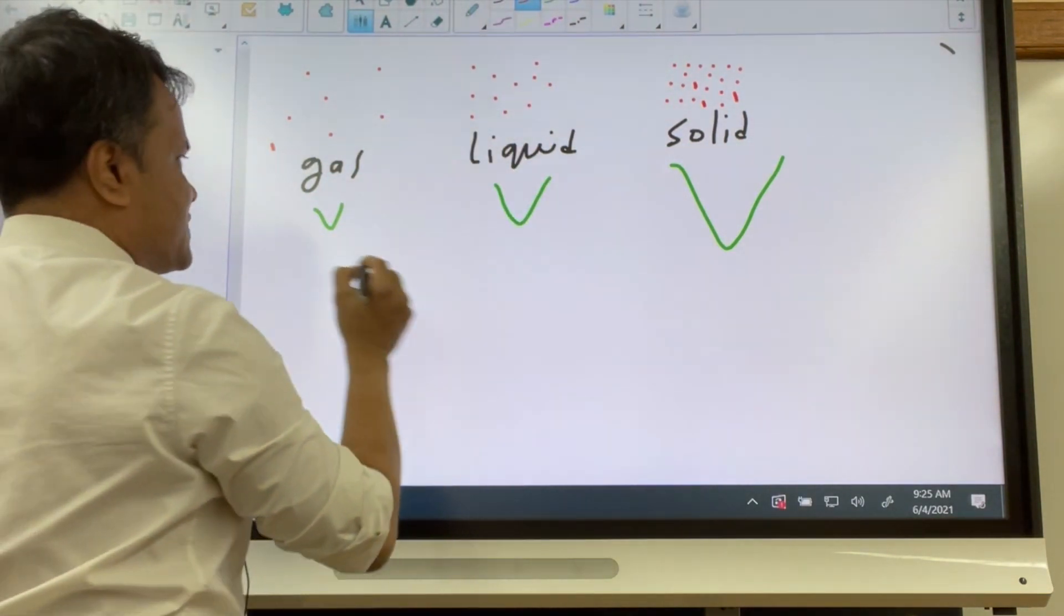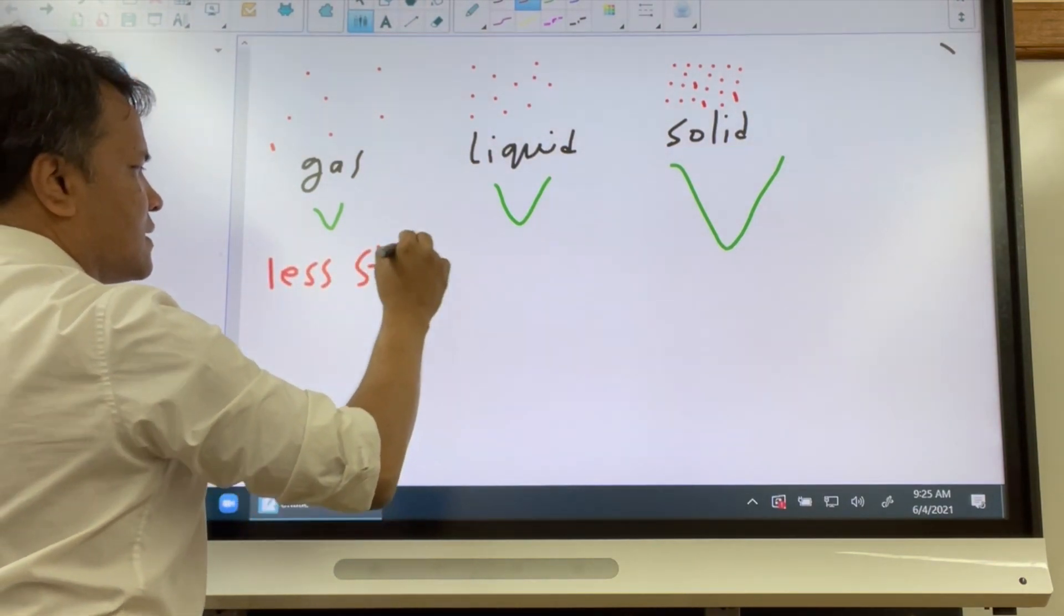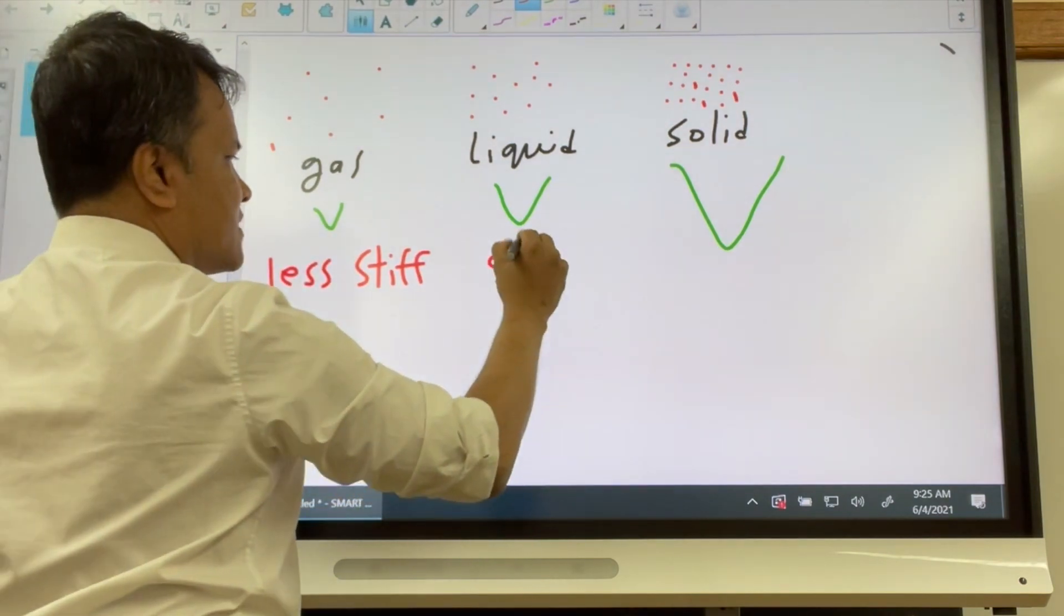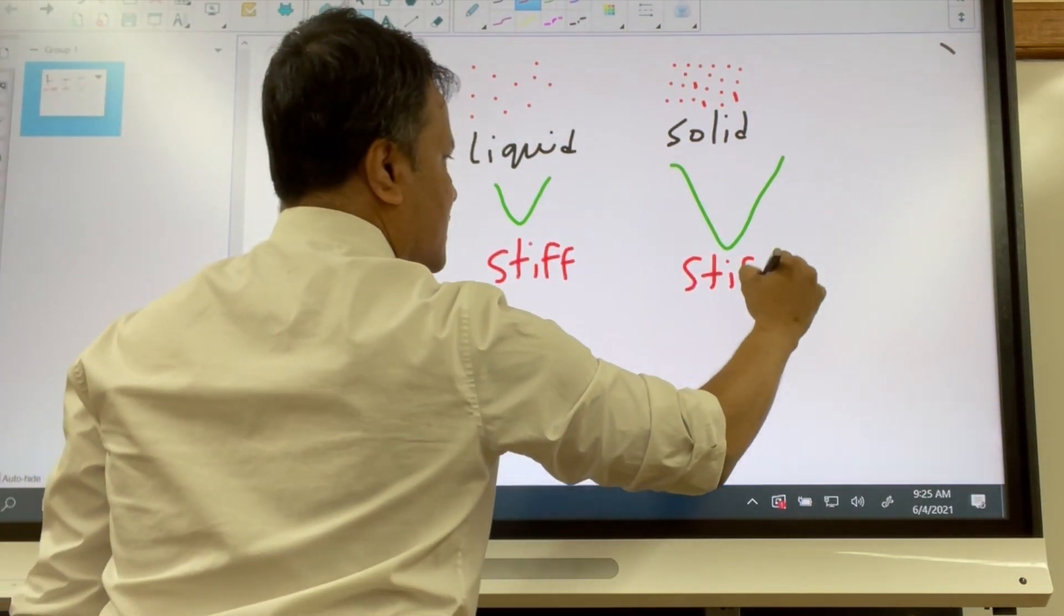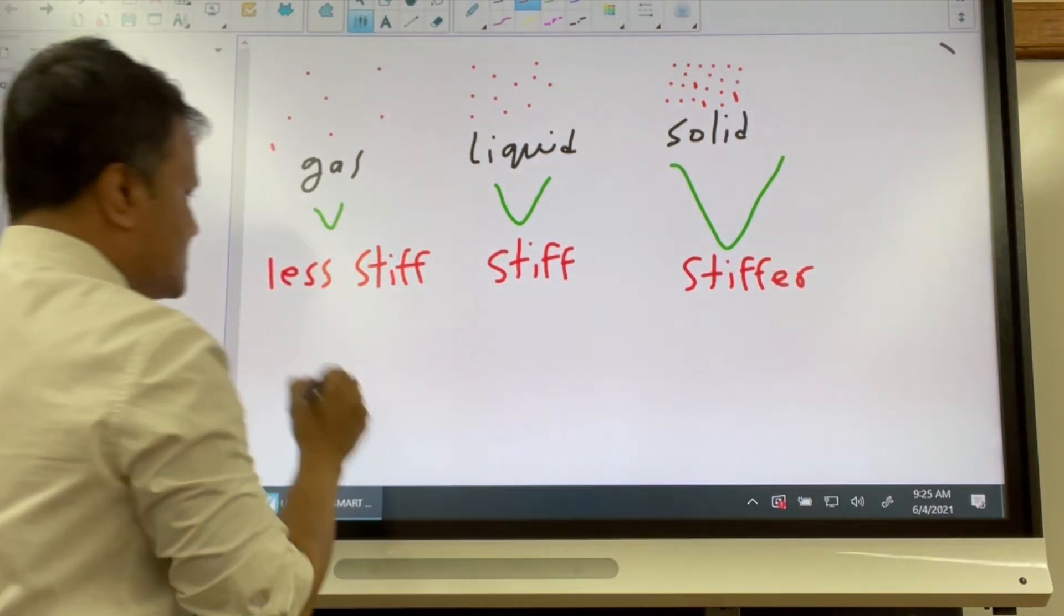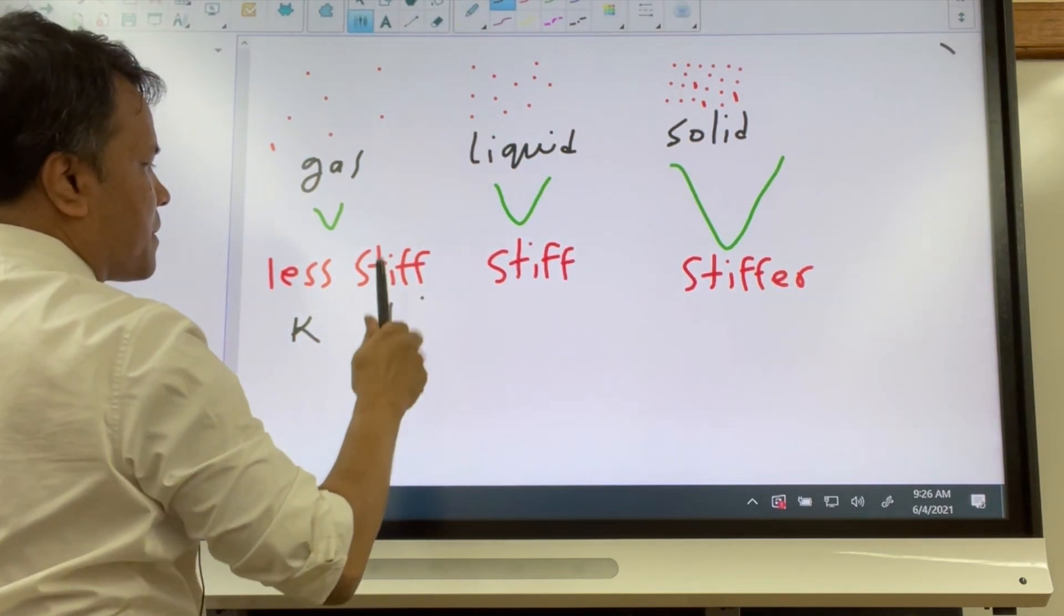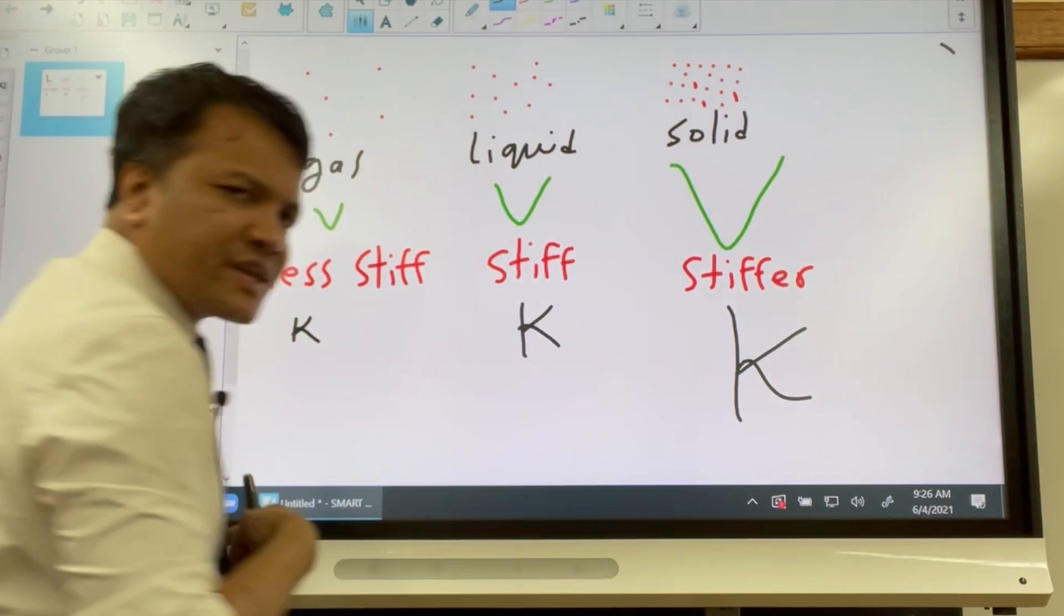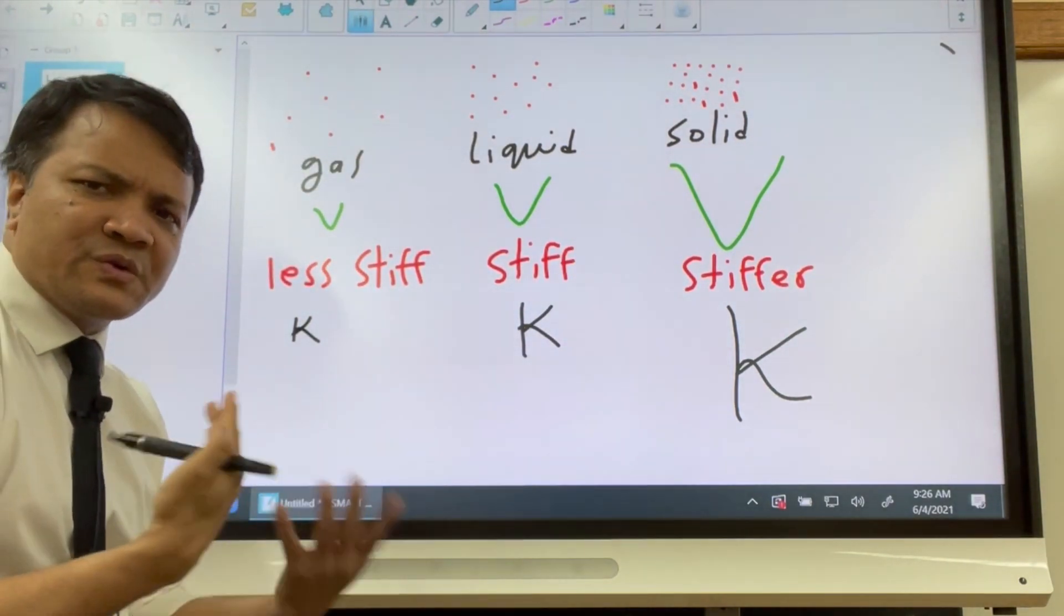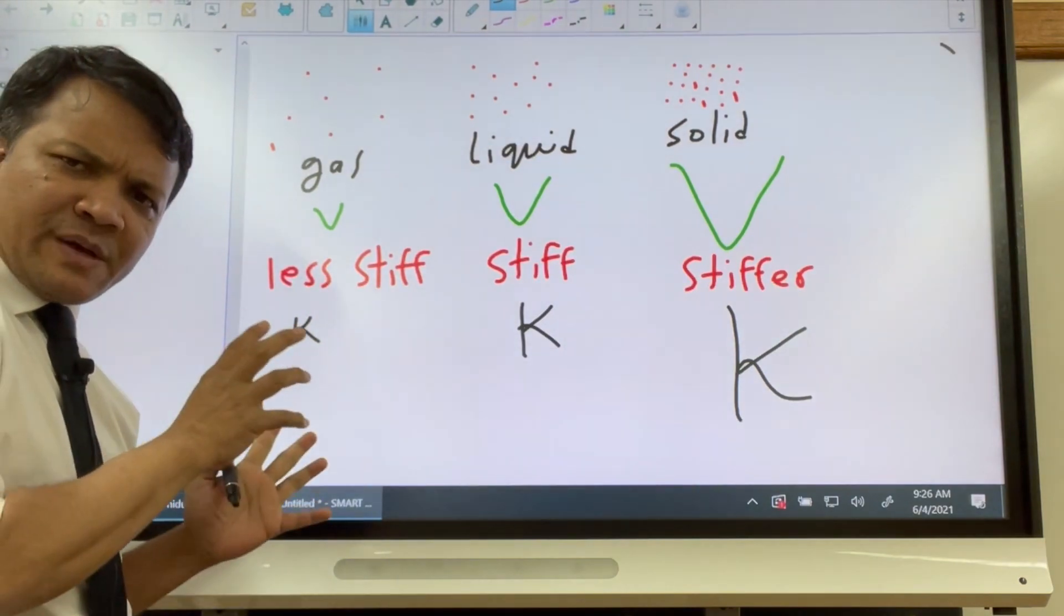This is stiff, and this is stiffer. What does that mean? Small k, big k, and even bigger k. As the k gets bigger, the speed of sound also goes big. Now we're going to see that this is our hypothesis.